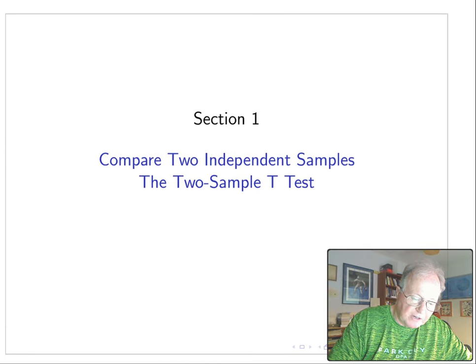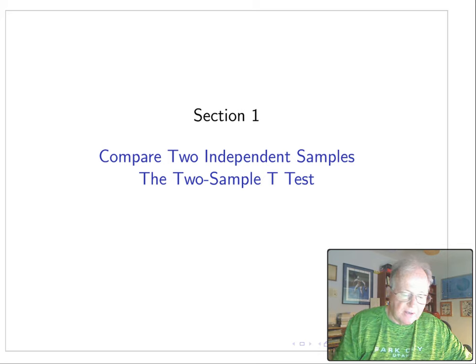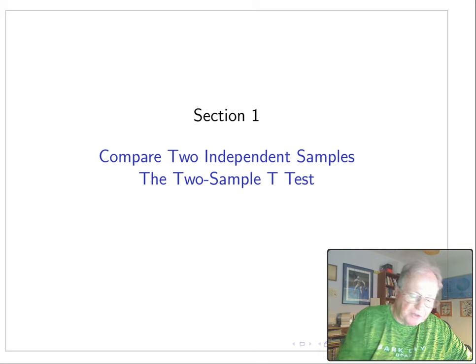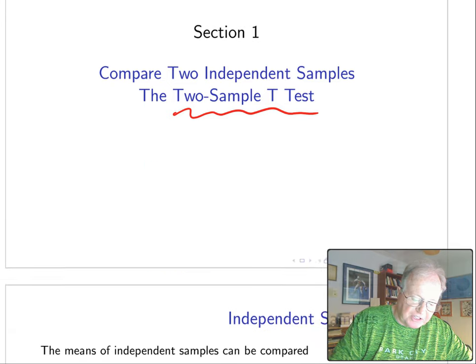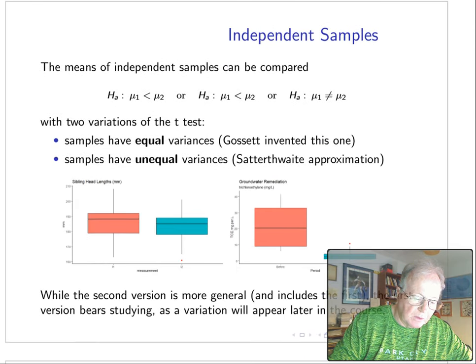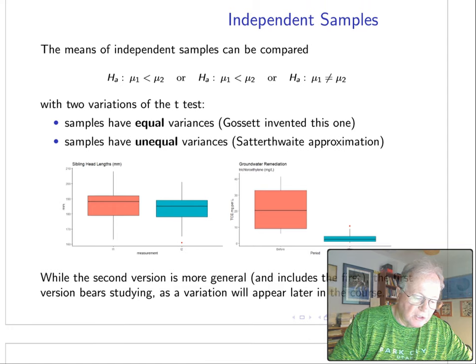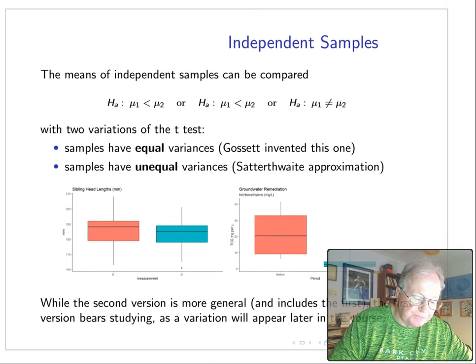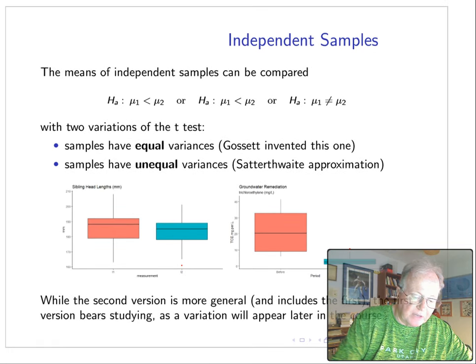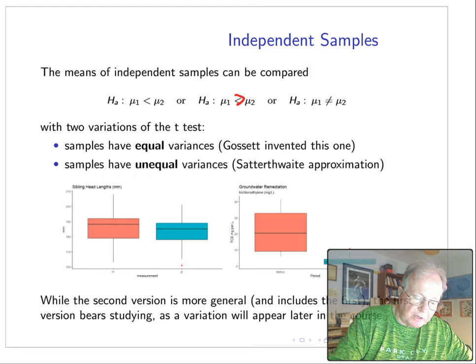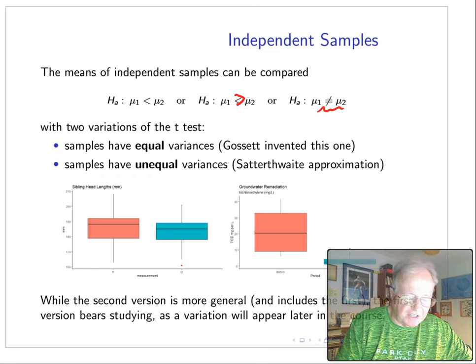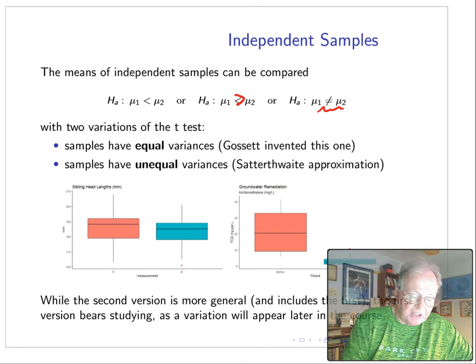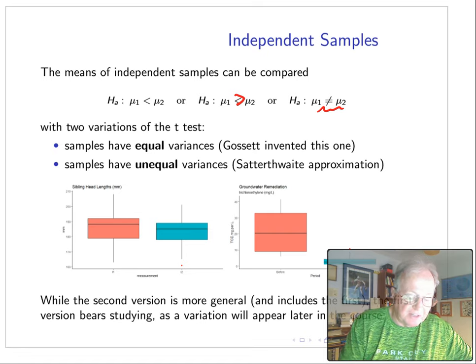There's two variations of this thing. The first one is to compare two independent samples, and this is usually called the two-sample t-test. So we can do a comparison less than, greater than, or not equal.